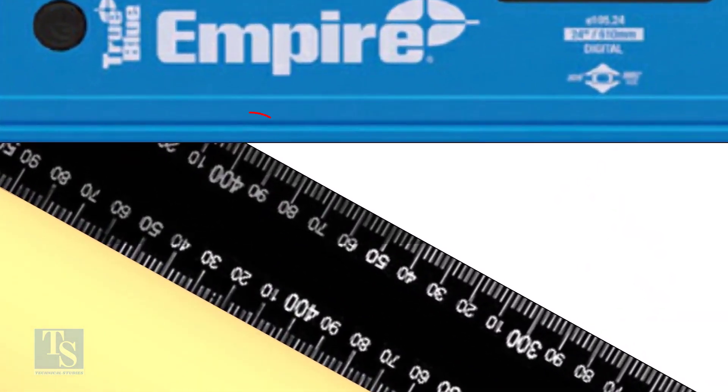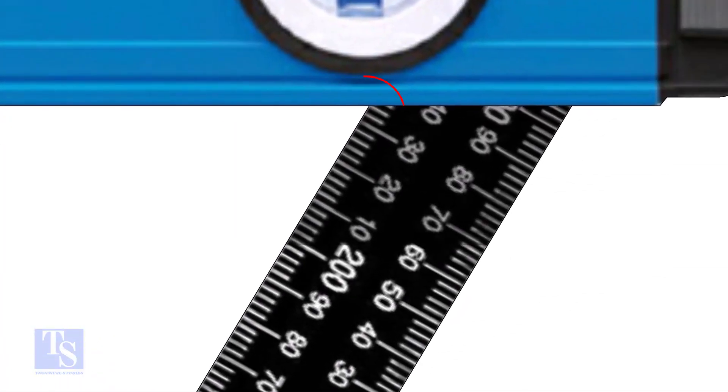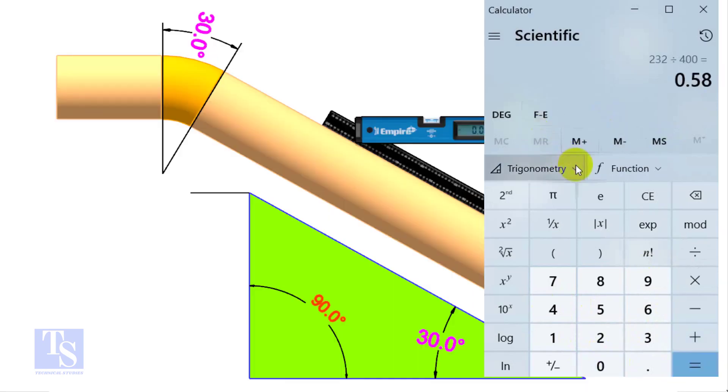In this case, the run is 400mm, and the set is 232mm. Divide 232 by 400. Apply tan inverse or second tan. If you round the figure, the answer is 30 degrees.